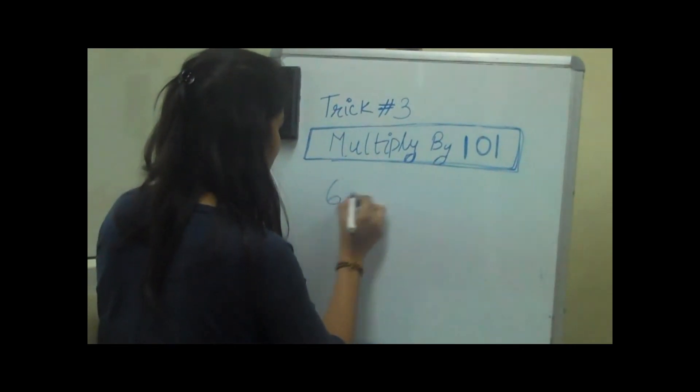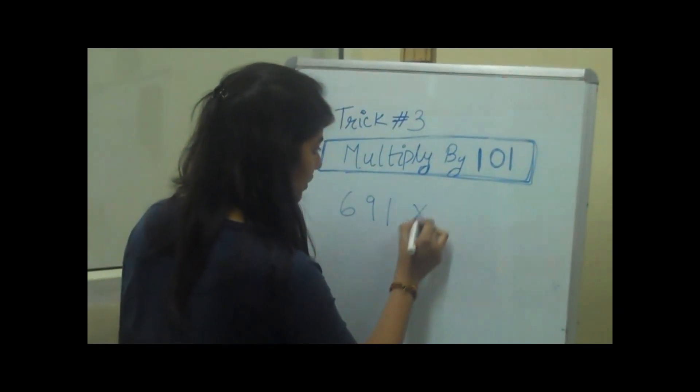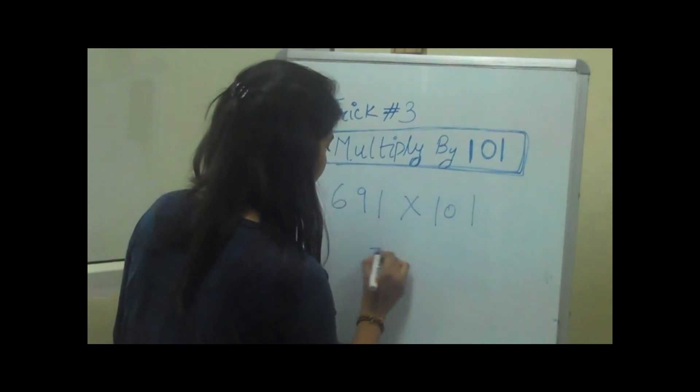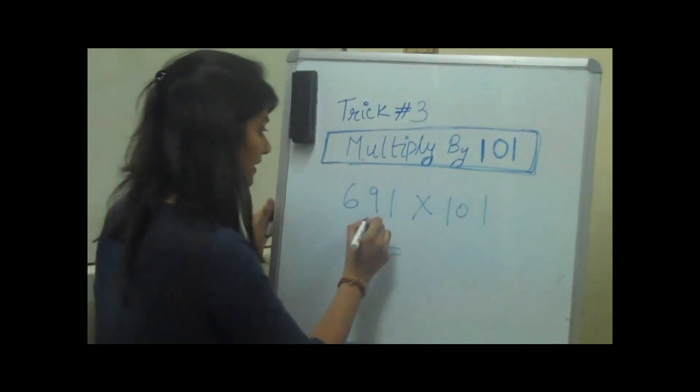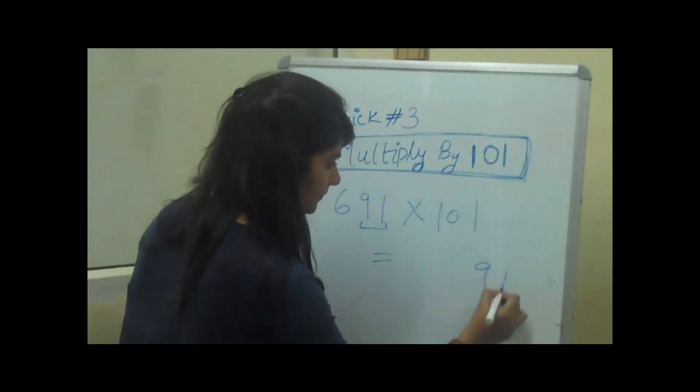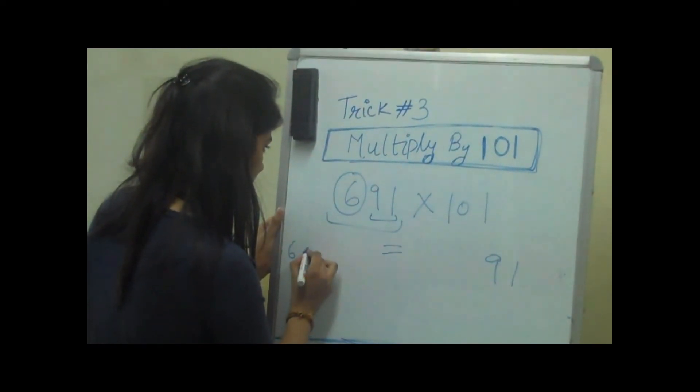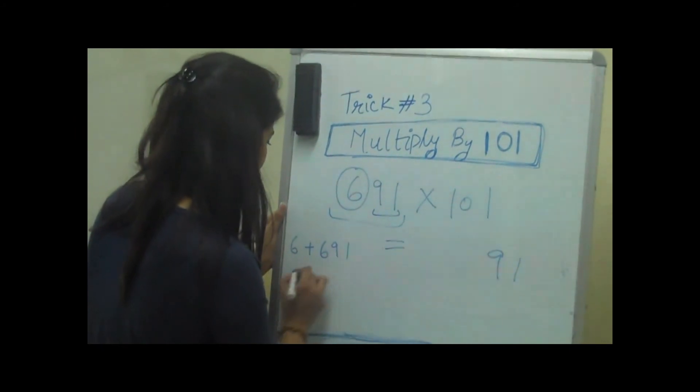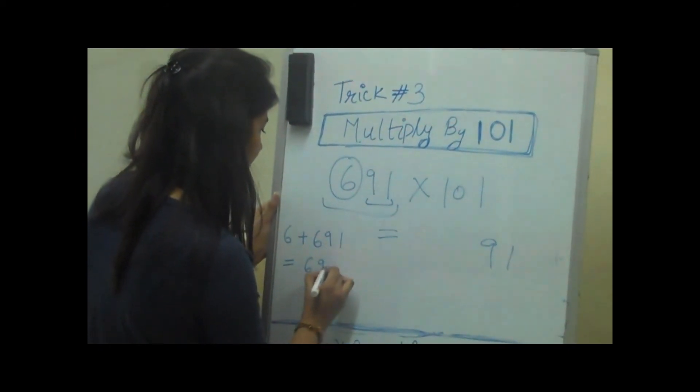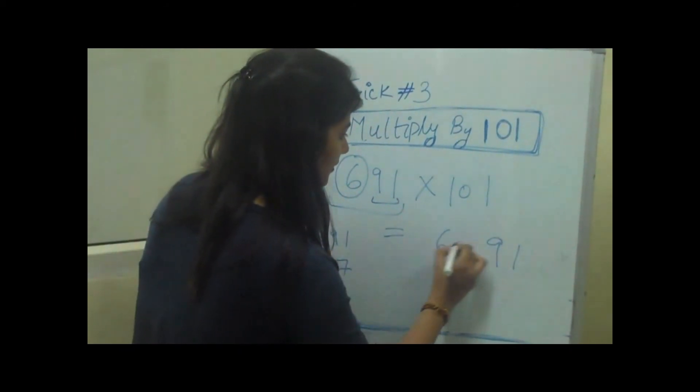If we have a number 691 and we want to multiply with 101, we will put the last two digits as is, and then we will add the first digit to the whole number. We will add 6 to 691, which is 697, and we will put it here.